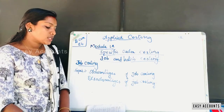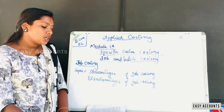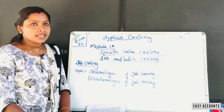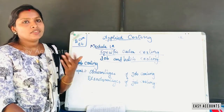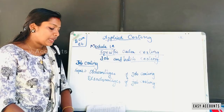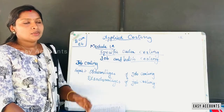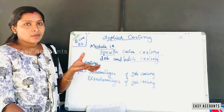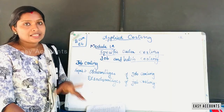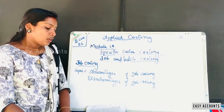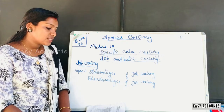Job costing helps in controlling cost by eliminating waste. Spoilage and defectives can be easily identified, including where spoilage occurs and what materials are wasted. The individual's responsibility can be easily identified and the responsibility may be fixed on the individual's department.